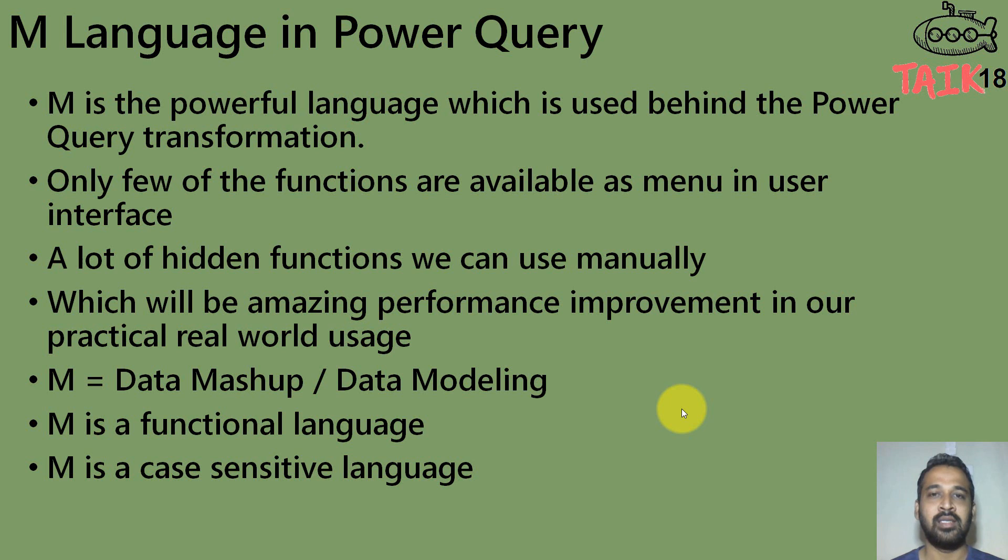A lot of hidden functions we can use manually, which will be amazing performance improvement or productivity improvement in our practical real world usage. So M stands for data mashup or data modeling. M is a functional language and M is a case sensitive language.